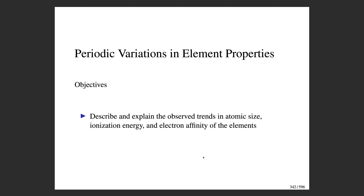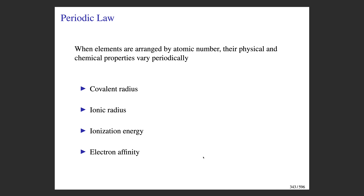In this video we are going to be talking about periodicity and the periodic table. The idea is that there are a number of atomic properties that show a periodic structure — the observations we see amongst different atoms follow certain trends with respect to their placement in the periodic table. These include atom size, ionic radii, ionization energies, and electron affinities. This periodic law states that when you arrange elements by atomic number, various physical and chemical properties vary periodically across the periodic table.